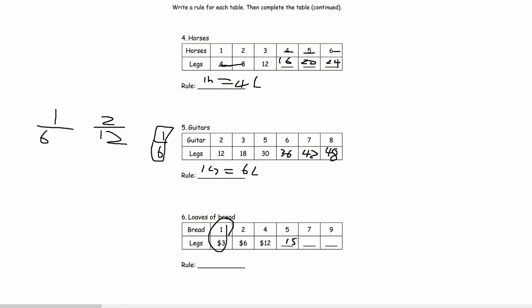We could keep multiplying it. $15. And, this one is a 7. And 21, and 27. 1 bread is equal to 3 legs.